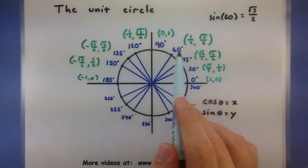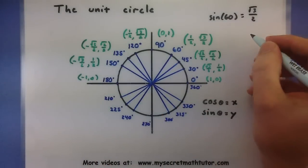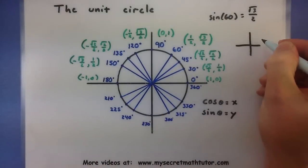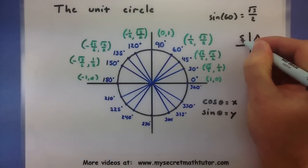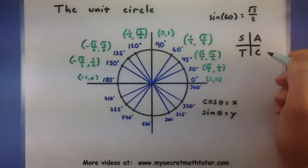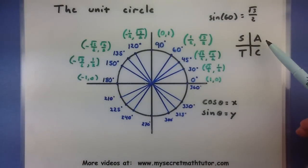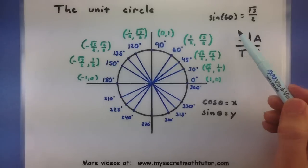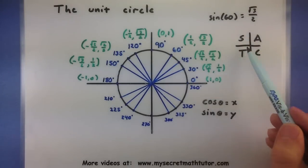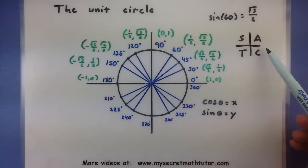You can remember the signs of your values from simply remembering that all students take calculus. This will tell you that all the trigonometric functions are positive in the first quadrant, sine is positive in the second quadrant, tangent is positive in the third quadrant, and cosine is positive in the fourth quadrant. So that will help you keep track of all the signs.